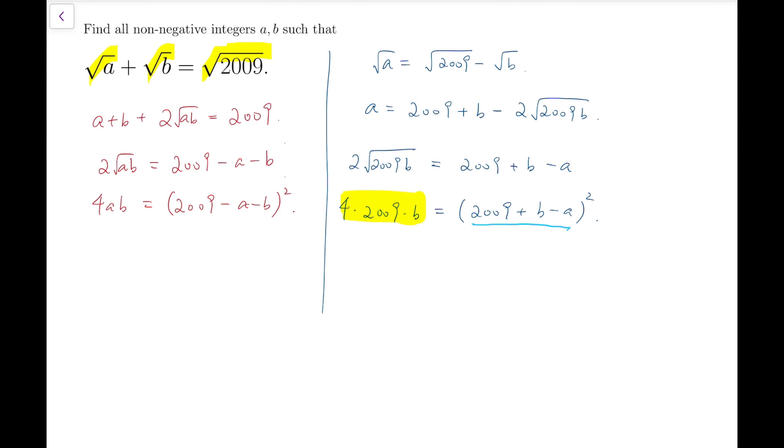Now, to proceed from this, you have to notice that 2009 is actually 2025 minus 16, which is actually 45 squared minus 4 squared. So I can factorize it to become (45 plus 4) times (45 minus 4), which gives 49 times 41.